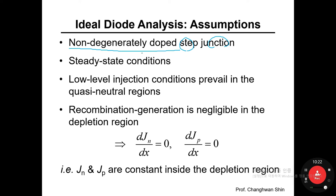The second assumption is steady-state conditions. In other words, for a given DC bias, we derive the total current value. Steady state means DC.